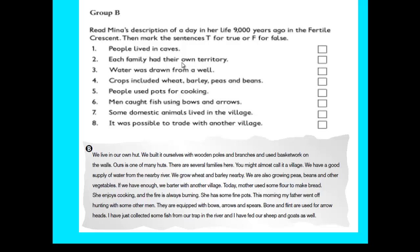Why? Because they caught fish using traps. And number seven: Some domestic animals lived in the village. It's true. It was possible to trade with another village. And this is a true sentence.